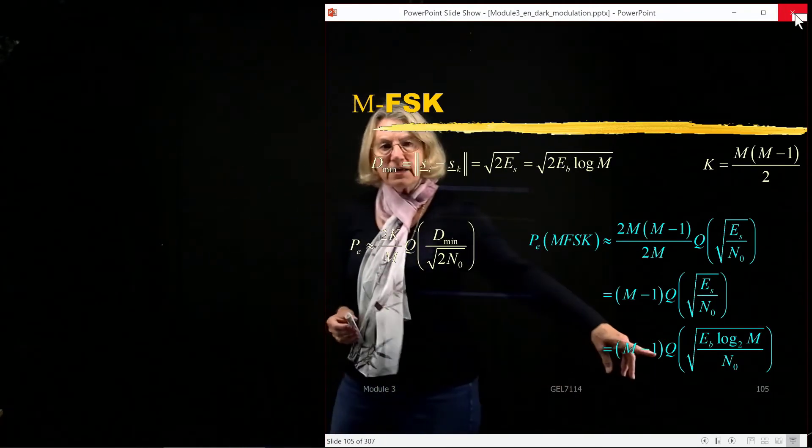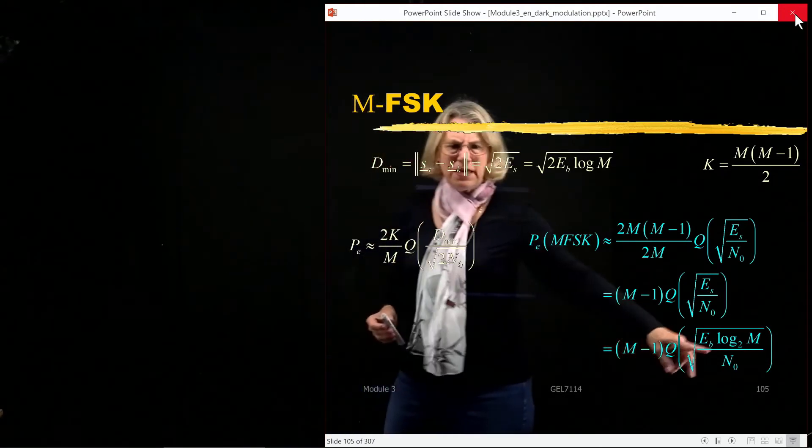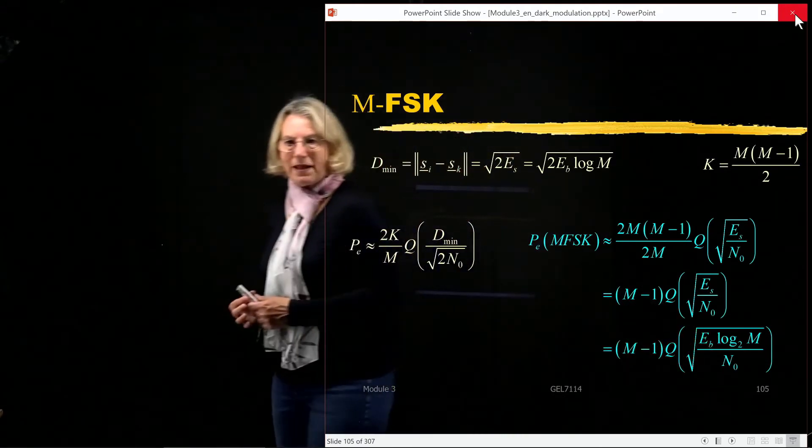and that simplifies so that MFSK is m minus one is a multiplicative factor before the Q function, and then the argument of the Q function is the square root of Eb times log two m divided by N0.